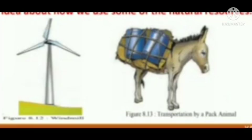The next question is: what are the animals in the pictures doing? The answer is that the animals are used for transportation purposes in this picture. Children, in this picture there is one tall device shown. Can you tell me what is the use of this device? Yes, it is a windmill and it is used to generate electricity through wind.